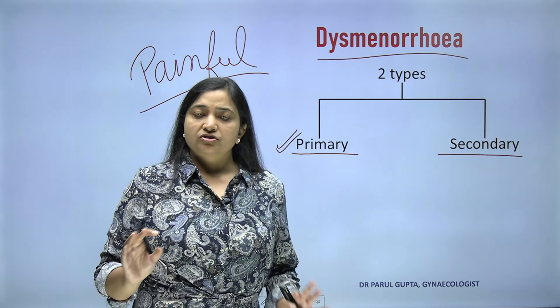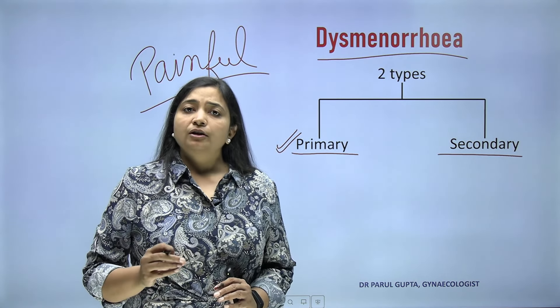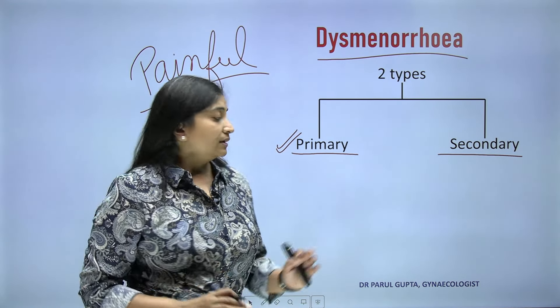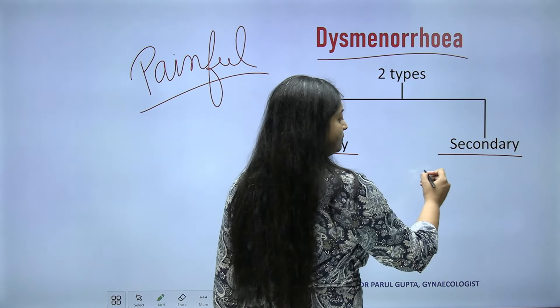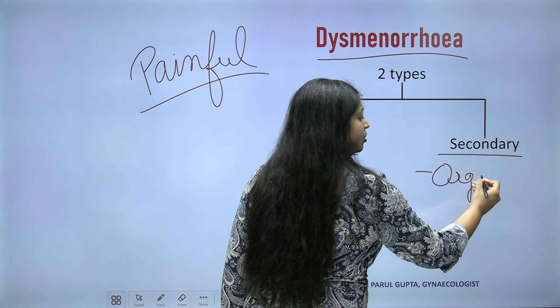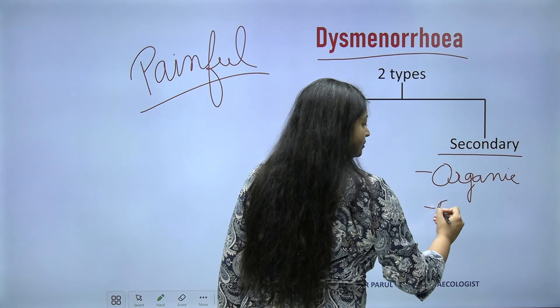The next clinical aspect is dysmenorrhea — painful menses, painful enough to cause disruption of the normal routine of that woman. There is primary dysmenorrhea and secondary dysmenorrhea. Primary dysmenorrhea is something in which there is no organic cause; generally seen in unmarried nulliparous women with intense pain during menstruation.